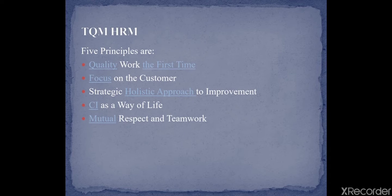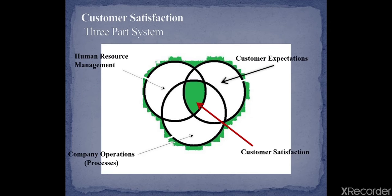Now, TQM and HRM. The five principles for implementing TQM are: first, quality work the first time; second, focus on the customer; third, strategic holistic approach to improvement; fourth, continuous improvement as a way of life; and fifth, mutual respect and teamwork. These are the most important principles for implementing TQM.